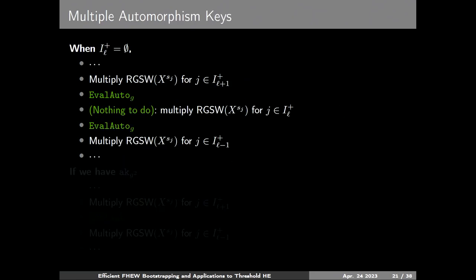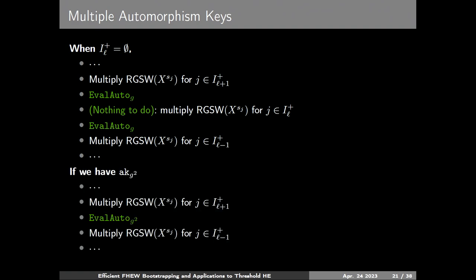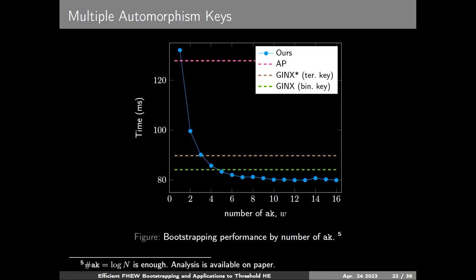There is another optimization using multiple automorphism keys. If I_l is empty — which happens quite often — once we add all s_j for j in I_{l+1}^+ and perform eval_auto, we have to multiply s_j's for j in I_l, but there is nothing to do, so we perform two consecutive automorphisms by g. Instead, if we have automorphism by g^2, we can reduce to one automorphism by g^2. Using a small constant number of automorphism keys like 6 or 10 outperforms existing algorithms — it is even faster than binary Jinx.